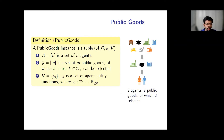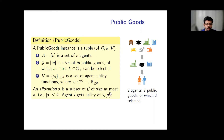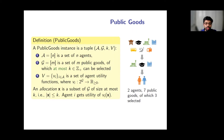I will now introduce the model of public goods. As before, we have n agents, m public goods, and utility functions v1 through vn. Additionally, we are given an integer k, which is an upper bound on the number of public goods that can be selected. An allocation is simply a subset of goods satisfying this cardinality constraint. One can think of k as a collective budget that agents jointly spend on public goods priced at one each — this connects the model to participatory budgeting.